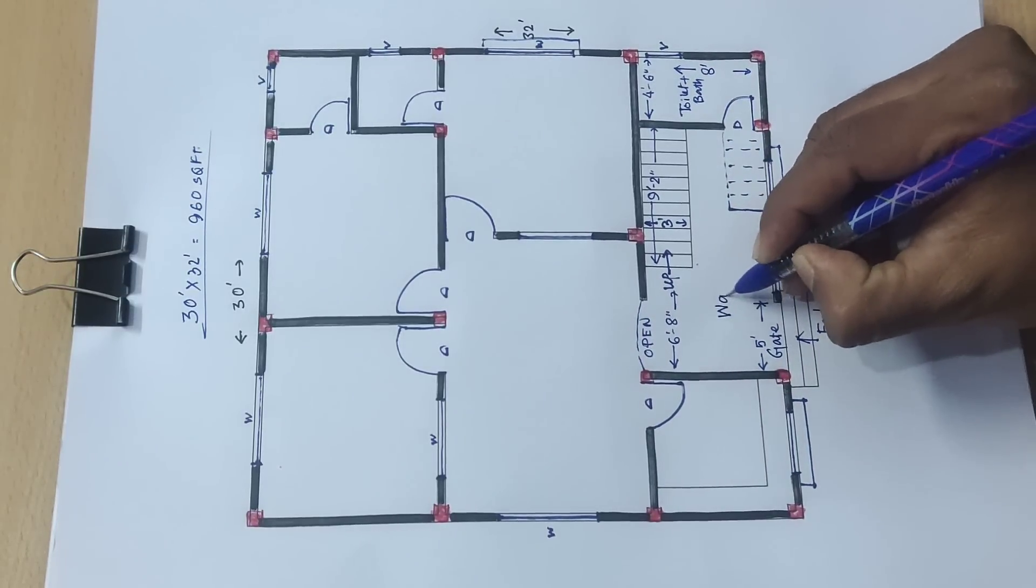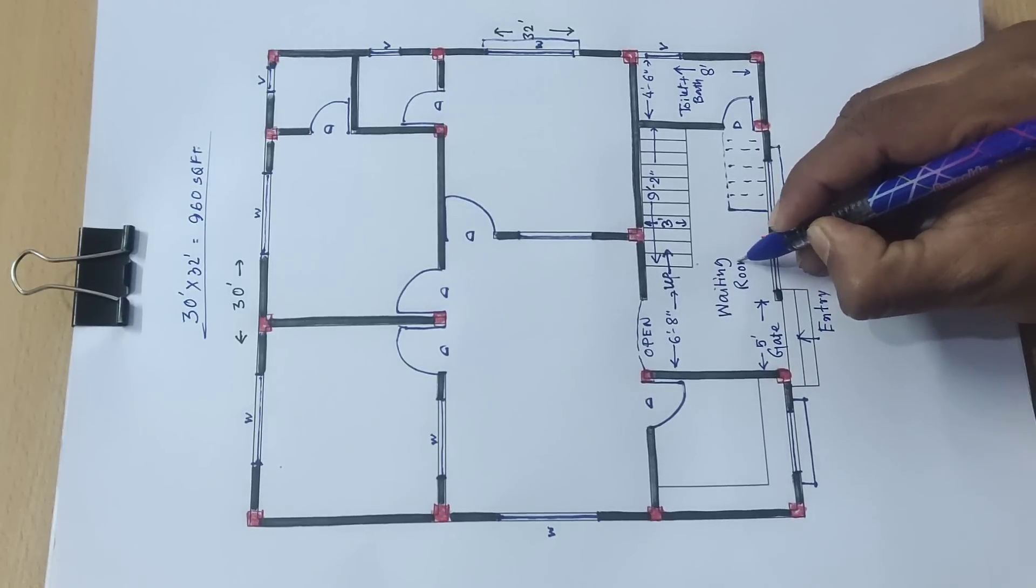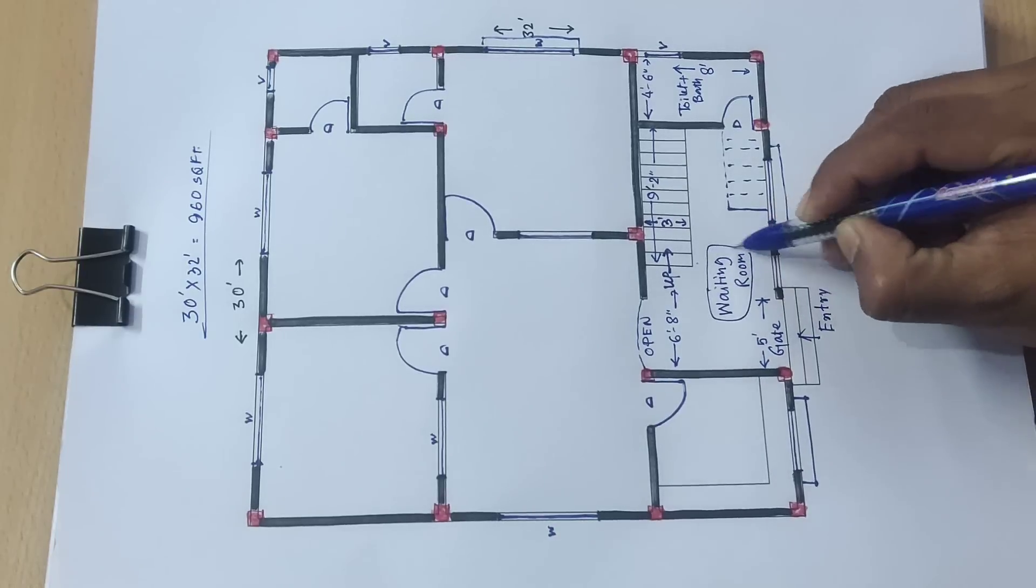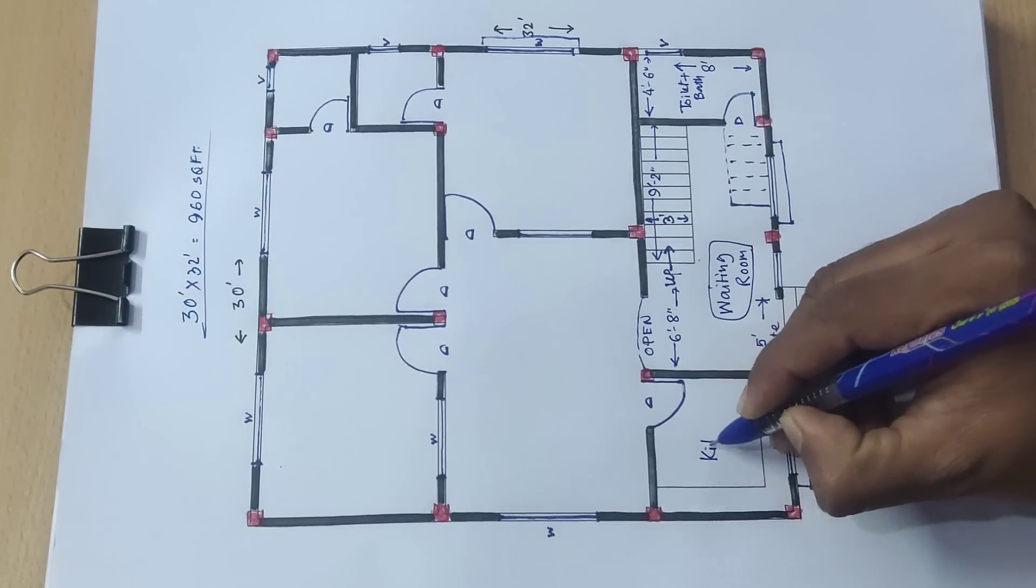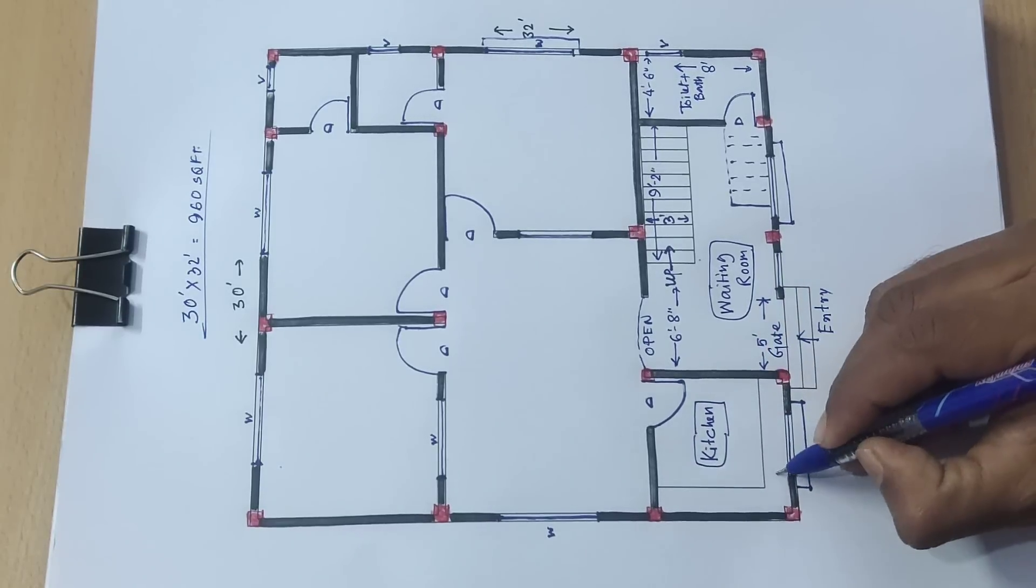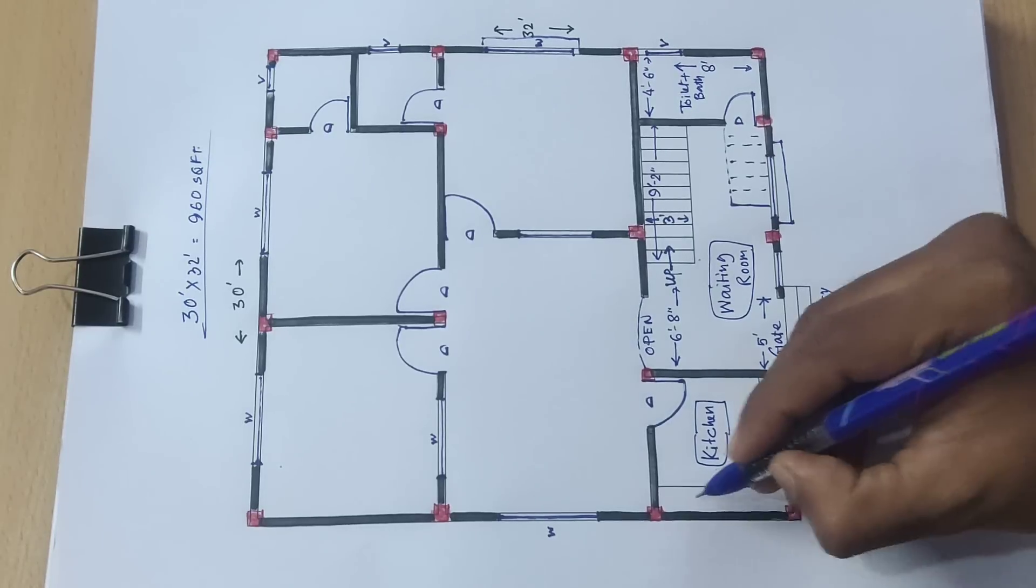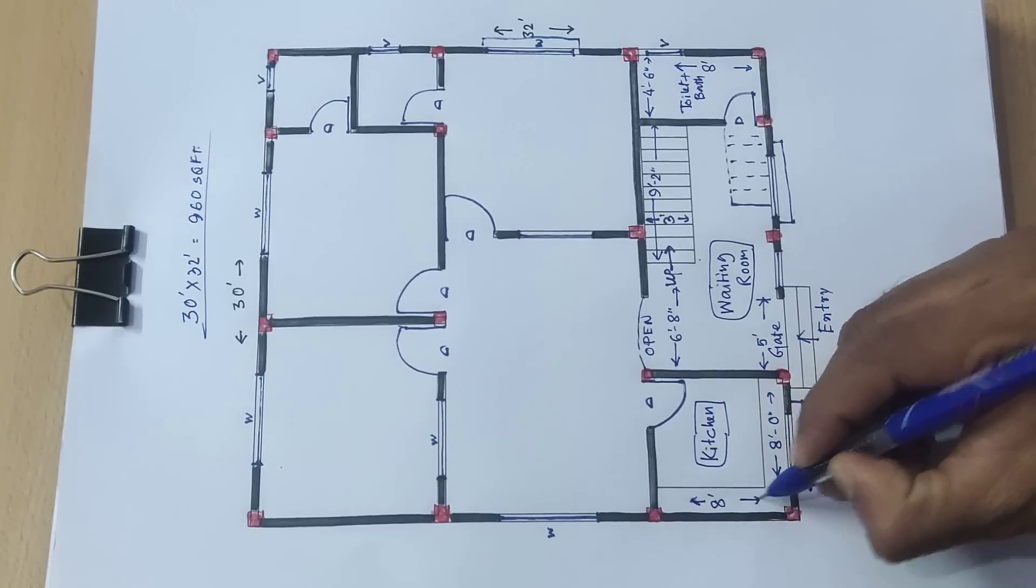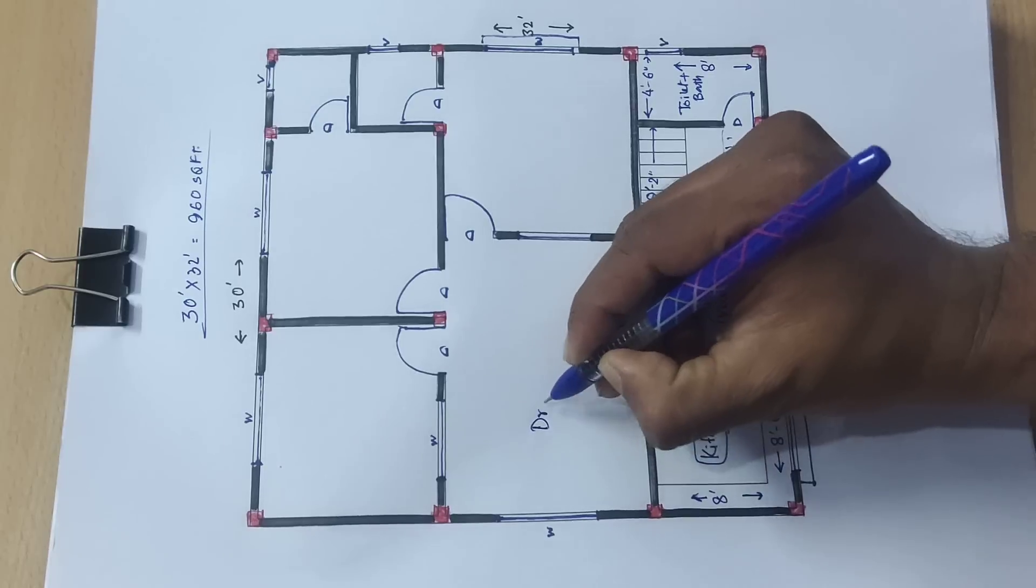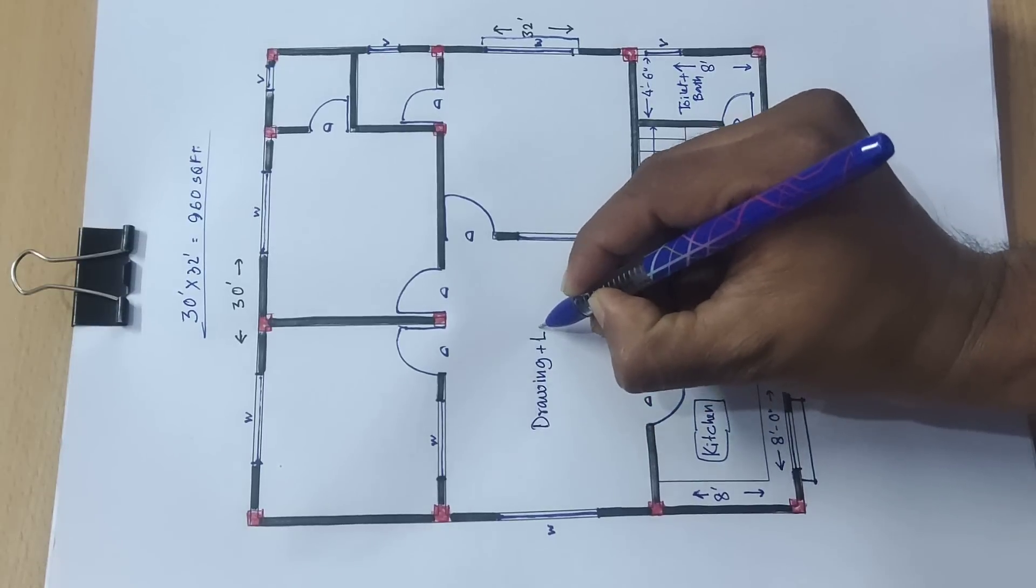Here waiting room area will be. Here kitchen, its distance will be 8 feet and this side 8 feet into 8 feet.